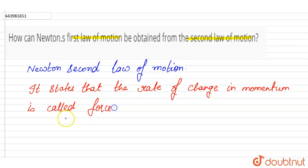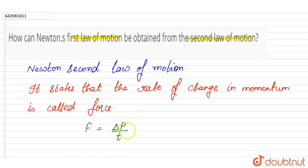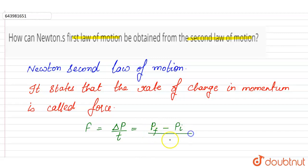That means F is equal to change in momentum, that is delta p, per unit time. Here, p is the momentum. Now, the change in momentum will be p final — that is the final momentum — minus p initial, that is the initial momentum, per unit time.